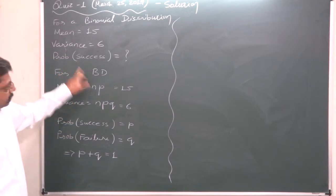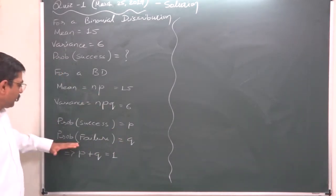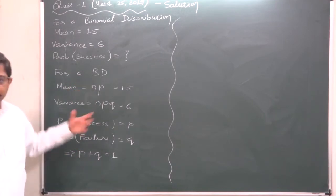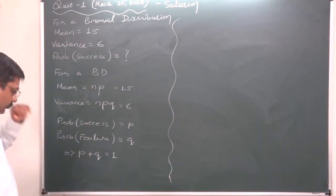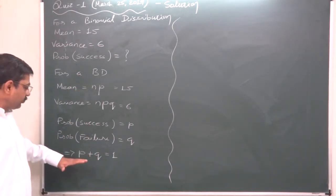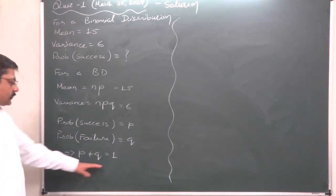So, we want to know the value of P, and Q stands for probability of failure, and N stands for number of observations. And the relationship between P and Q is P plus Q equals 1.